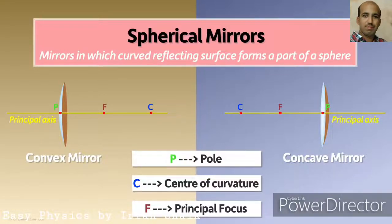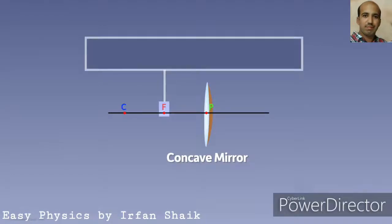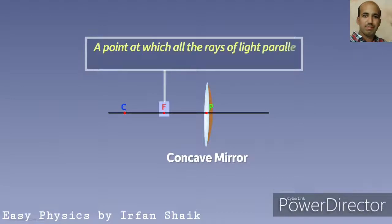Now let us focus on a concave mirror. The focus is a point at which all the rays of light parallel to the principal axis converge after reflection. Let's understand this in detail.